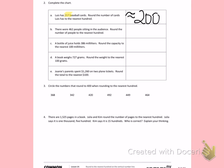B, there are 462 people sitting in the audience. Round the number of people to the nearest hundred. I'm thinking about 462 and picturing this number line in my head. I know 462 fits between 400 and 500 with my halfway number being 450. 462 is past the halfway number, so I will round up to about 500.